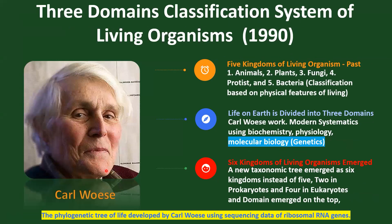The credit for the three-domain classification system goes to American biologist Carl Woese. He used sequencing data of ribosomal RNA genes and developed this modern classification system, which brought several changes in living organisms' classifications.